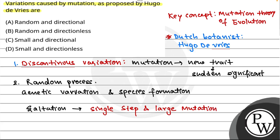So coming back to the question — variation caused by mutation as proposed by Hugo de Vries: it will be random but not directional, so 'random and directionless' is the correct option. There will not be small changes — there will be large-step changes. Small and directionless would apply to gradualism, which is Darwin's idea. So directionless yes, but small changes — no.